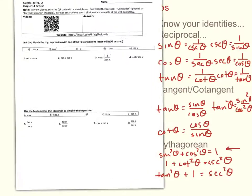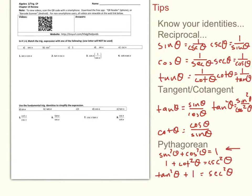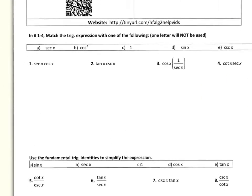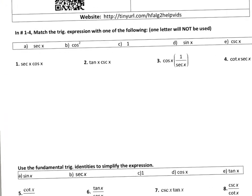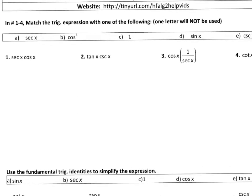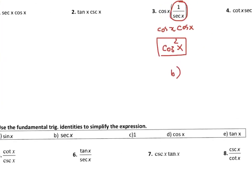Let's look at a couple of questions. This is a matching problem where you need to solve expressions to find the answer. Looking at the first line: cosine times 1 over secant. Using the reciprocal identity, 1 over secant is just another cosine, so you get cosine squared x, which is choice B. Just change things around based on what you know — practice and play with these.